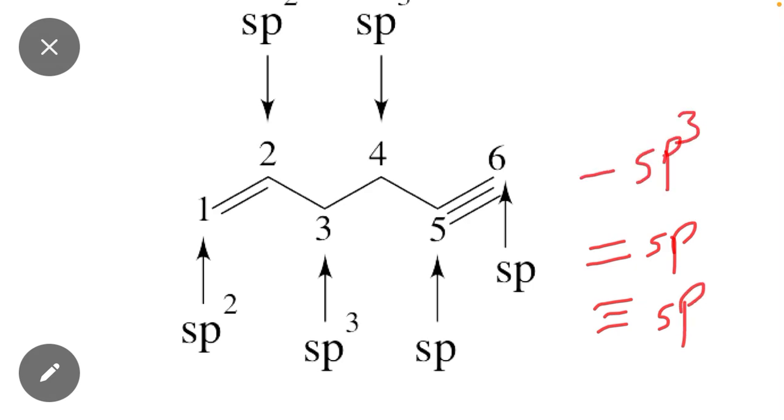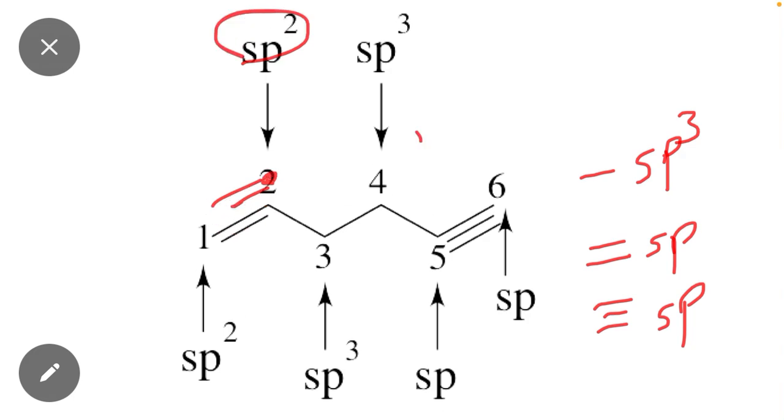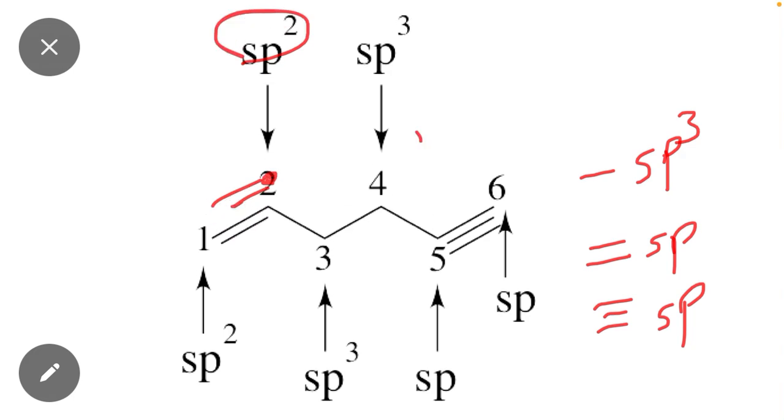Here you can see that carbon number two contains a double bond, which means its hybridization is sp². Carbon number three contains just a single bond, which means it has sp³ hybridization. That is why...